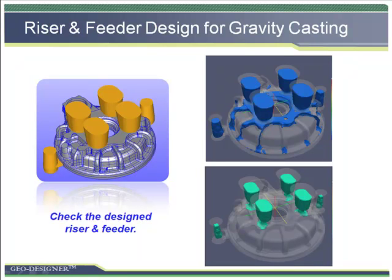Online checking provides a quick way to check the design. The user can make some fine tuning for the location and riser size. During the design, yield ratio and safety factor should be considered together. The user should also understand that the design and analysis of GeoDesigner is only based on geometry information, so some buffer should be reserved after considering the metal type and casting thermal conditions.